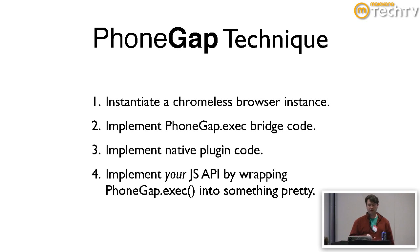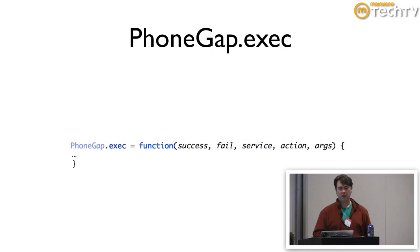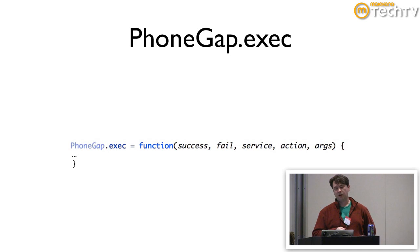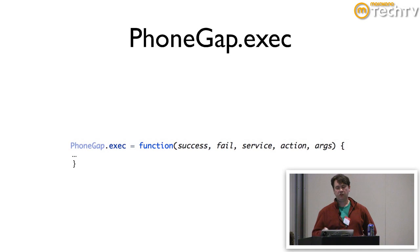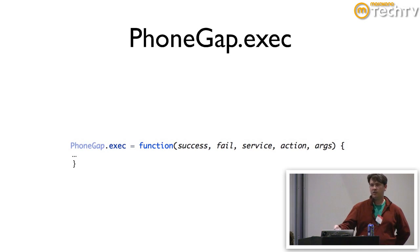Here's an example PhoneGap exec call from JavaScript — this is calling into native code. There's a success callback or a fail callback. There's a service, which could be something like accelerometer. There's an action, which could be something like getCurrentAcceleration. And there are arguments, which could be something that needs to be passed to that particular command.